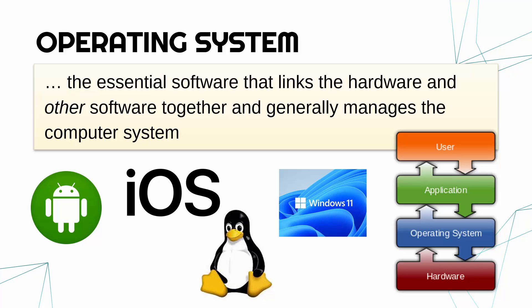Android and Linux are both open source, while iOS and Windows are closed source. You might have a bespoke one for a very simple embedded system, but most operating systems are off the shelf, like these four are.